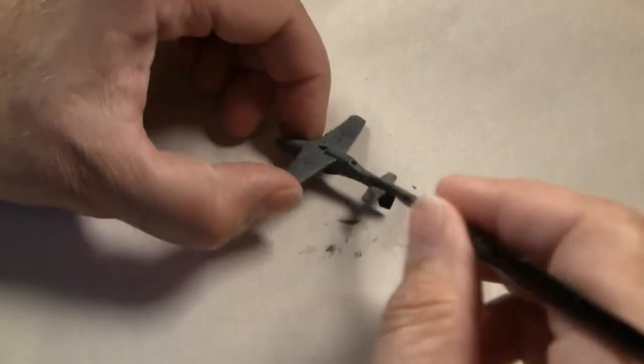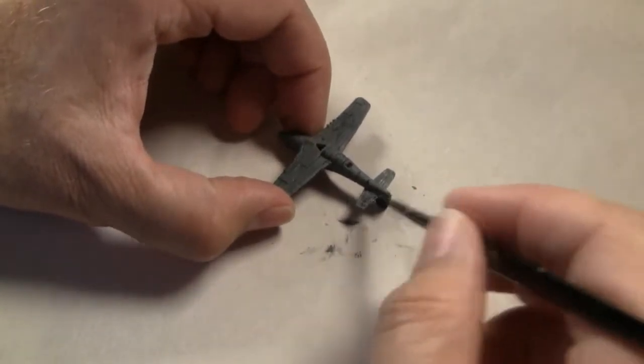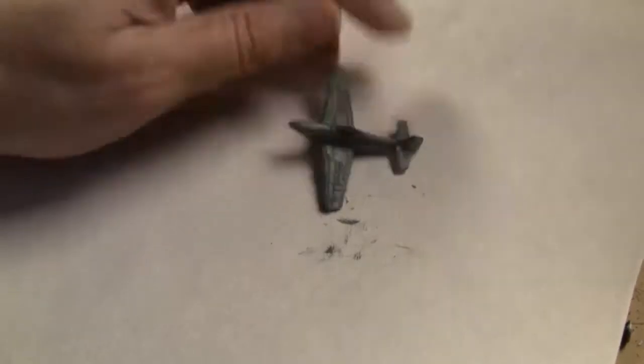We want to go ahead and coat the entire miniature in this color. For this step, I'm going to be using the Artificer layer Extra Small Brush. It is important to work the paint into all the little details.